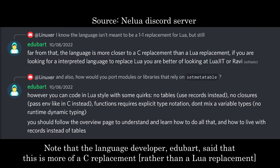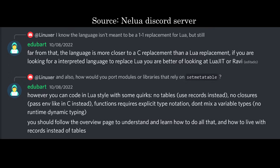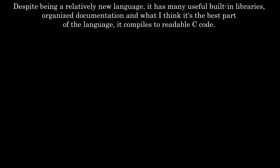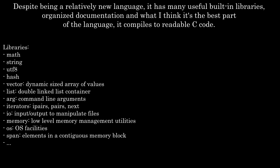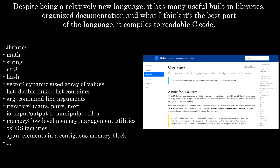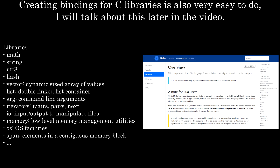Note that the language developer Edubart said that this is more of a C replacement. Despite being a relatively new language, it has many useful built-in libraries, organized documentation, and what I think is the best part of the language — it compiles to readable C code. Creating bindings for C libraries is also very easy to do, and I will talk about this later in the video.